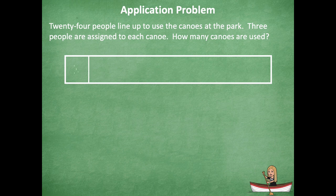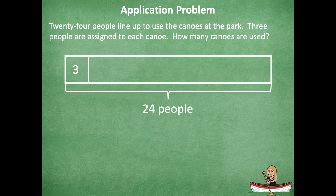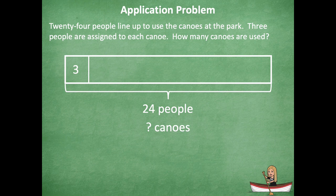I can see that there's three people assigned to each canoe. So I drew one canoe first. The total has 24 people and I'm trying to solve for how many canoes are used. So I know that I need to be counting by groups of three to solve how many groups of three there are that equal 24.